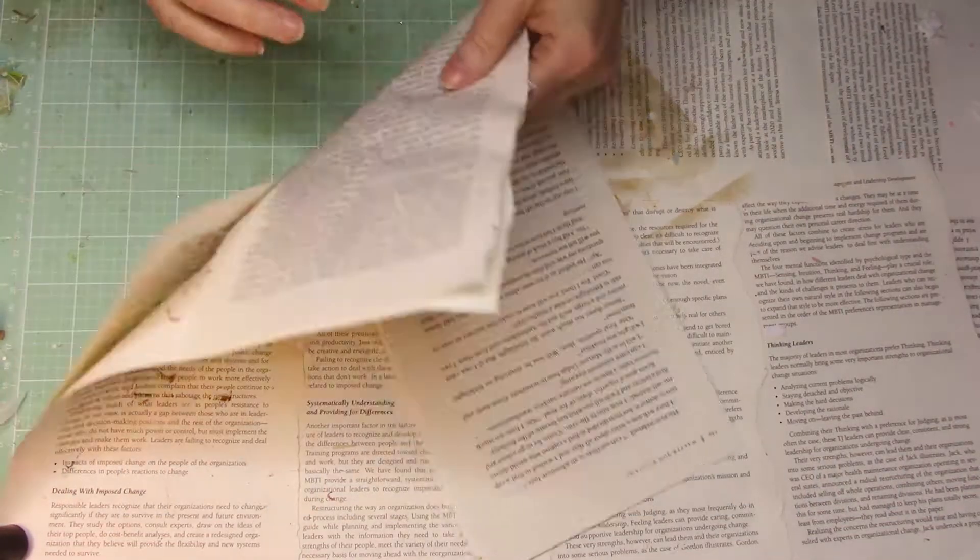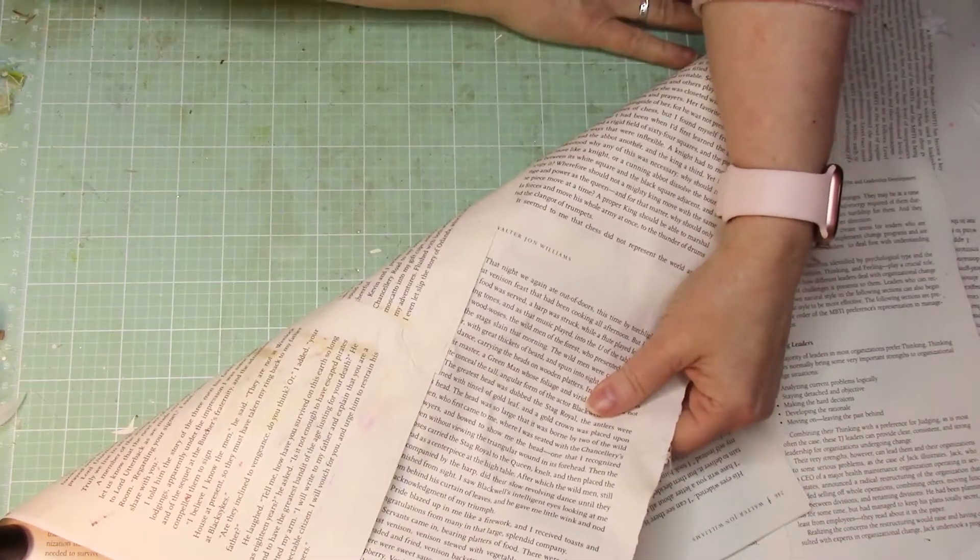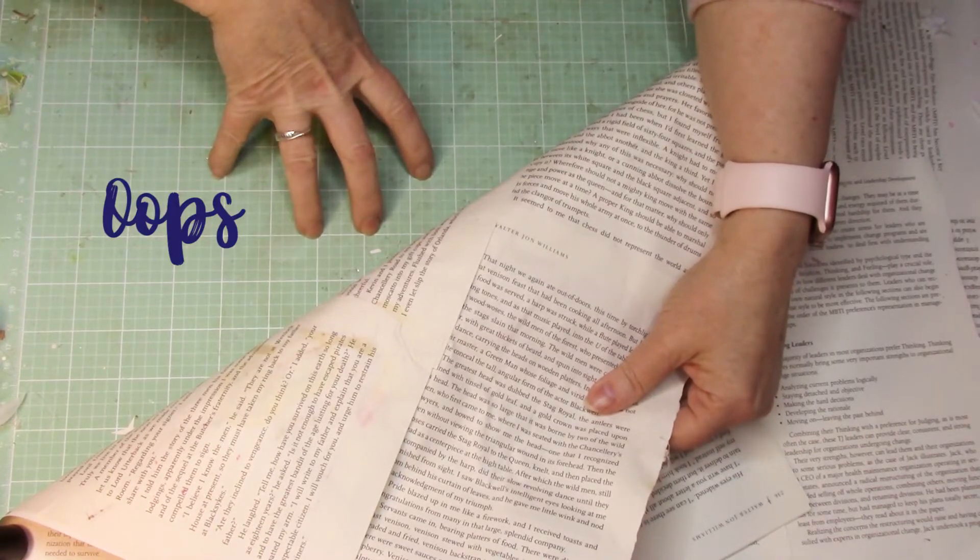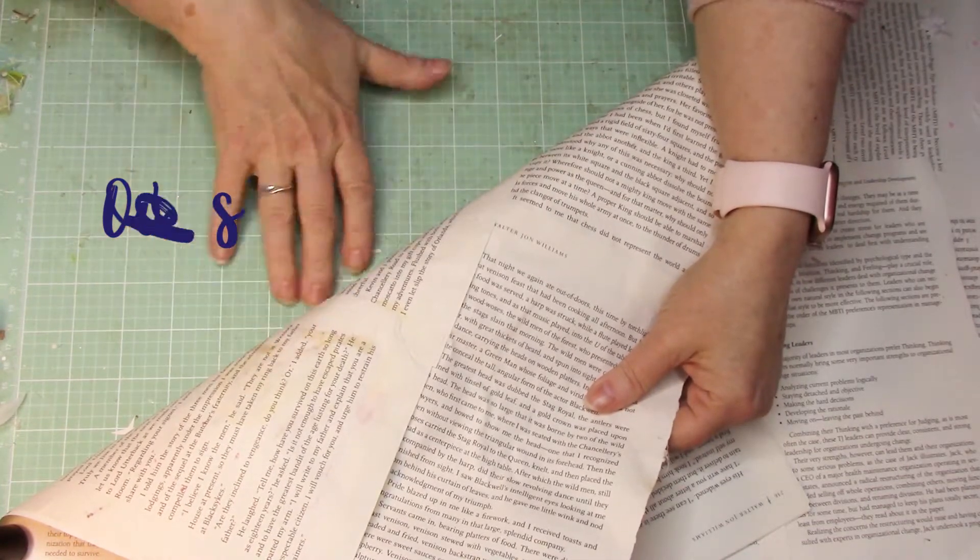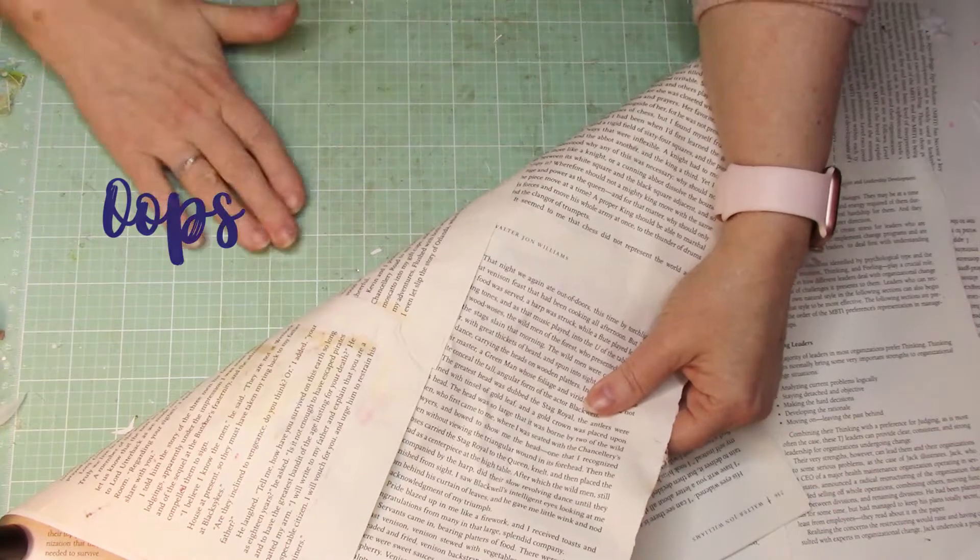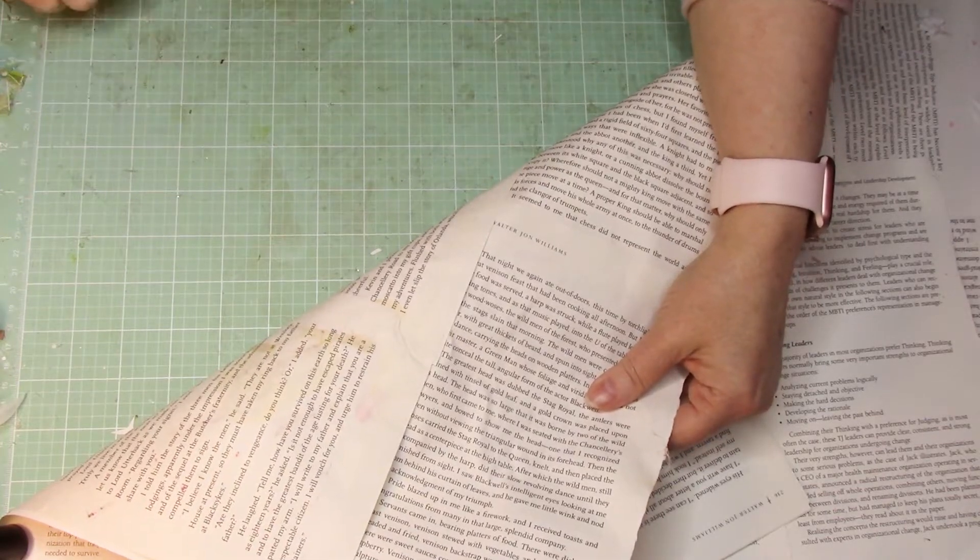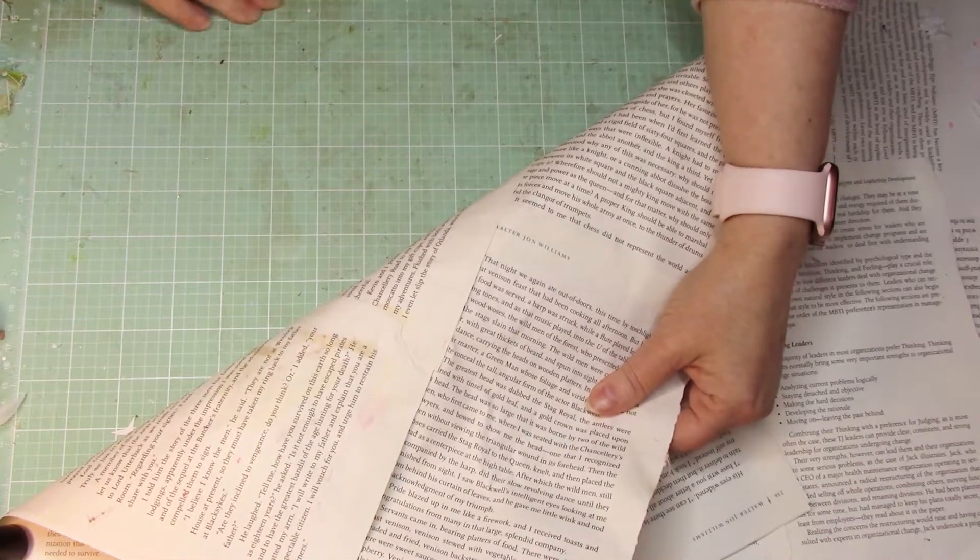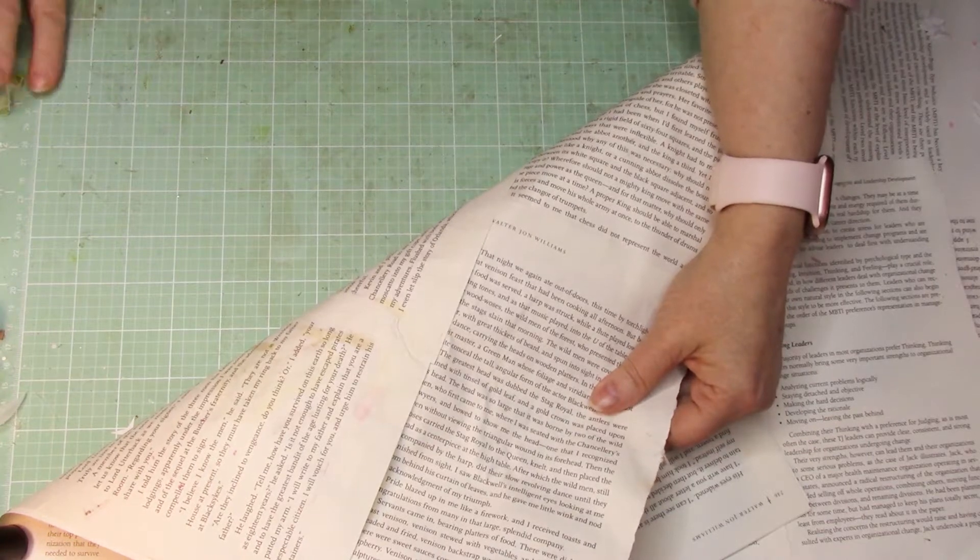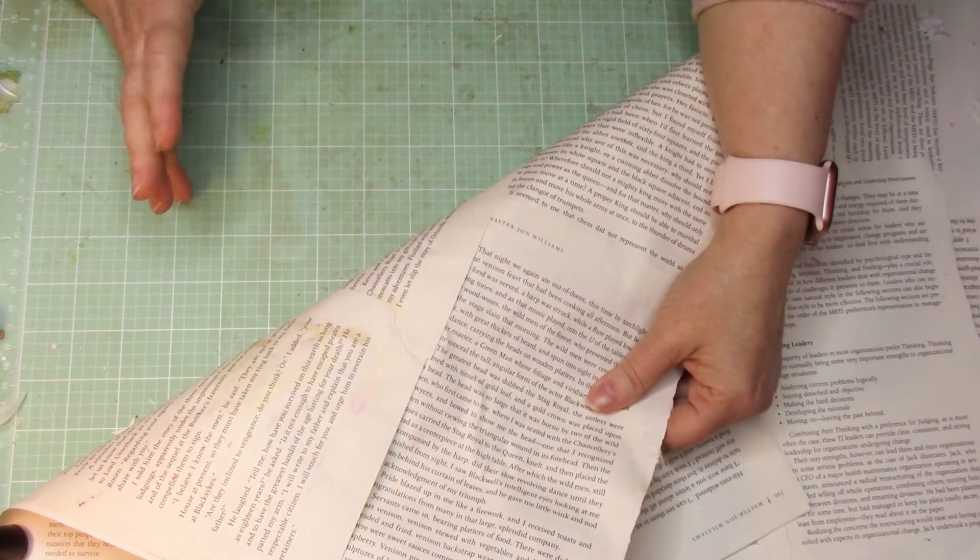So as a workspace, I have this wonderful mat right here, but what happened, I spilled some Tim Holtz ink on it and it kind of mucked up my board and then a lot of things have been sticking to it. I didn't like the look of it, but I wanted something that I could use in the meantime.